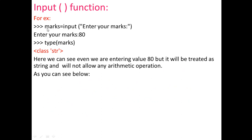The format for the input function is the variable name, followed by equals, then input, then the prompt. For example: marks = input('Enter your marks:'). Here 'input' is the name of the function, the prompt is enclosed in small brackets, and the string must be enclosed in quotes. Whatever you input through the function will be stored in the variable marks. As soon as you press enter, the prompt appears and the cursor blinks.